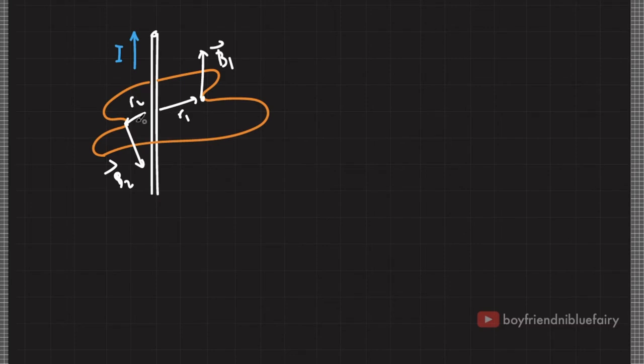So based on this figure, the magnetic field at a distance r₁ from the source has a different strength or magnitude than the magnetic field that is at a distance r₂ from the source.